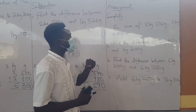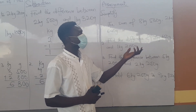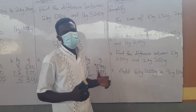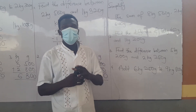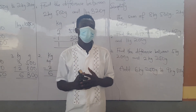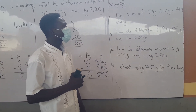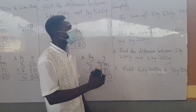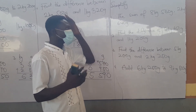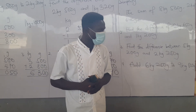Now we have assignment. You have to simplify: number one, the sum of 8 kilograms 500 grams and 2 kilograms 640 grams. We can also be asked to find the total sum in word problem form. Number two, find the difference of 2 kilograms 650 grams and 1 kilogram 200 grams. Try the assignment and submit for assessment.